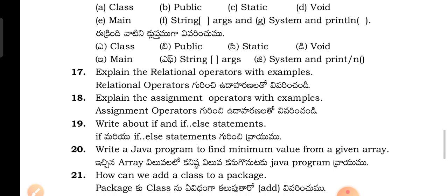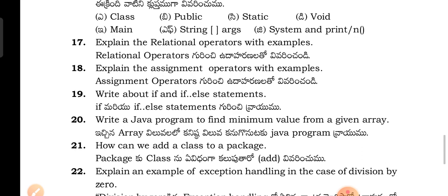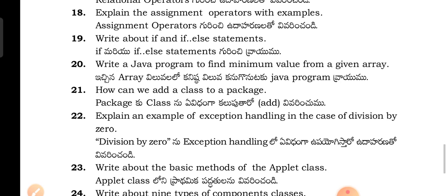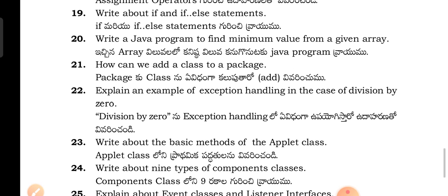Explain the relational operators with examples. Explain assignment operators with examples. Write if and if-else statements. Write a Java program to find the minimum value in a given array. How can we add a class to a package? Explain with an example. Exception handling in the case of division by zero.